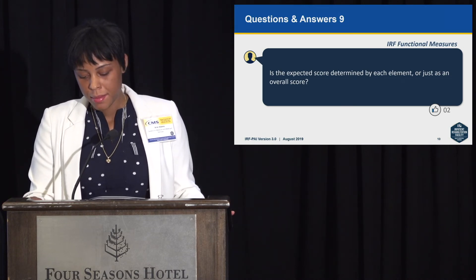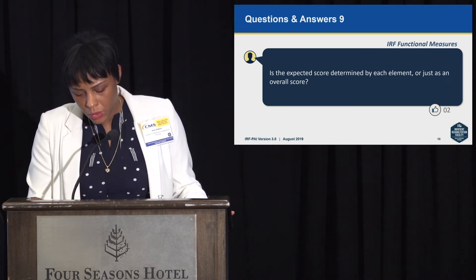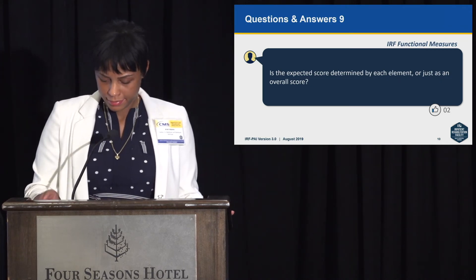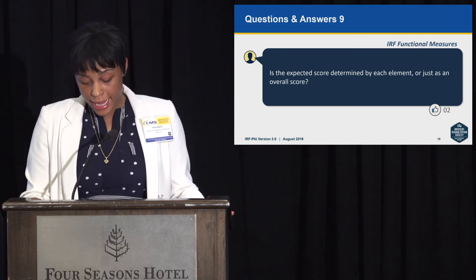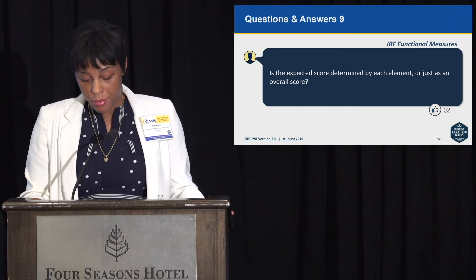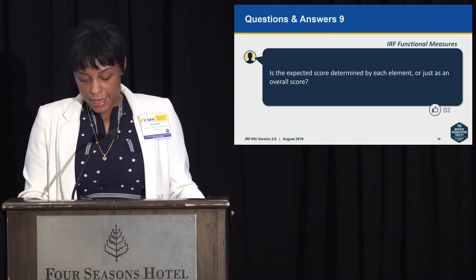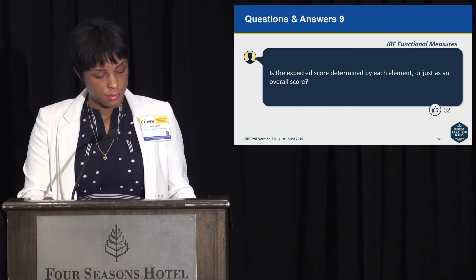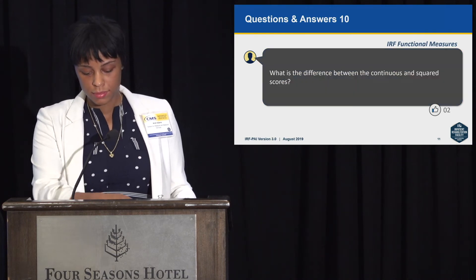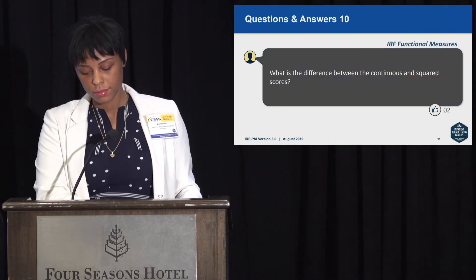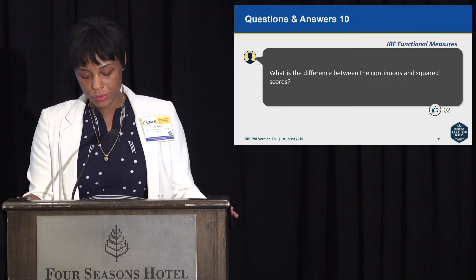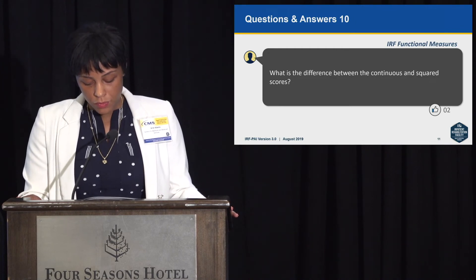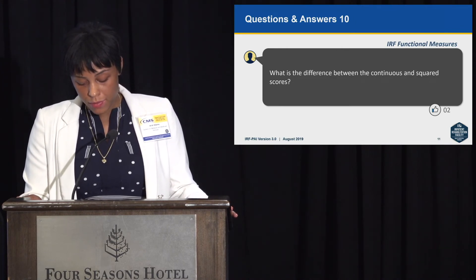Question 9: is the expected score determined by each element or just an overall score? The expected score is calculated at the level of the self-care score and mobility score, not at the item level. Question 10: what is the difference between continuous and squared scores? If the self-care score was 10, the squared value would be 10 times 10, which is 100.